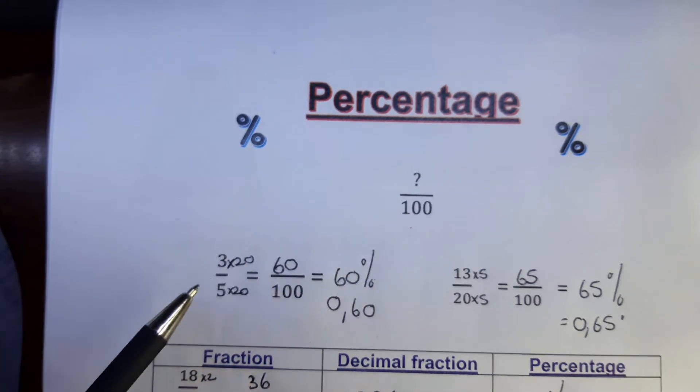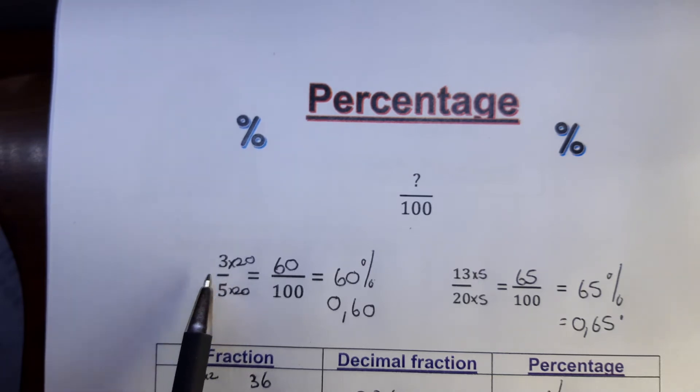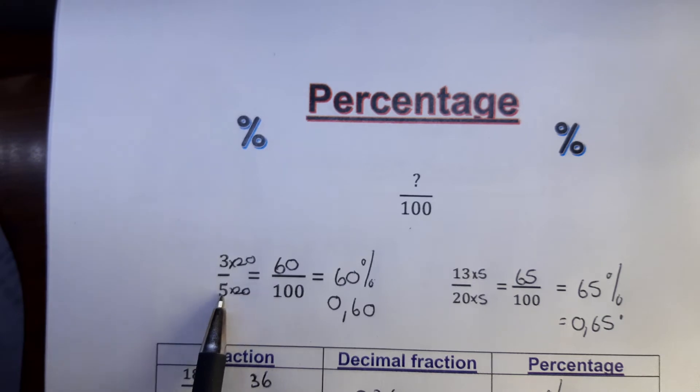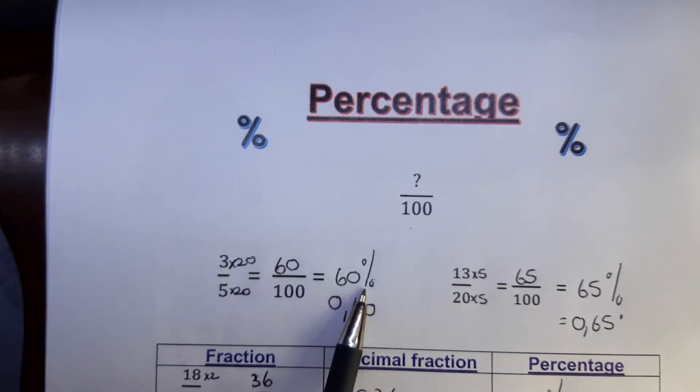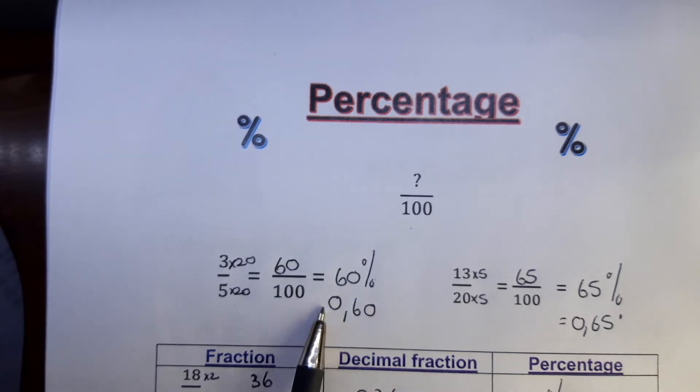Percentage is always something out of a hundred. If you have a fraction or a mark out of 5, you first convert that 5 to 100. What can you do with 5 to make it a hundred? You times by 20. Then it's 3 times 20. If you multiply the denominator, then you have to multiply the numerator with the same number, so that gives you 60 out of a hundred, and that is 60%, and that will be in decimal fraction 0.6 or 0.60.